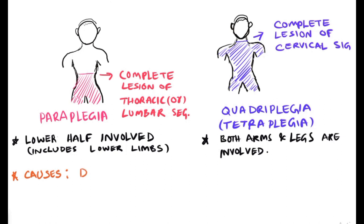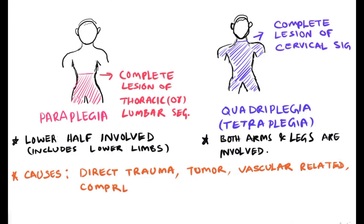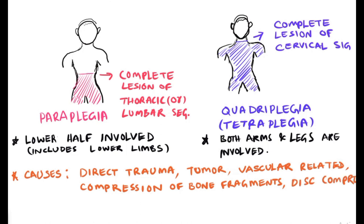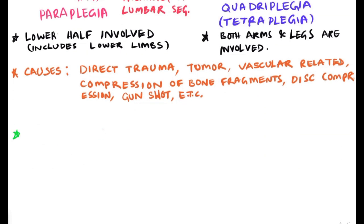The main causes of complete transection of the spinal cord are direct trauma — such as sports-related activity or automobile accidents — tumour, vascular-related blood vessel blockage to the spinal cord supply, compression of the spine, and disc compression. Gunshots are also a major cause of complete spinal cord lesion.